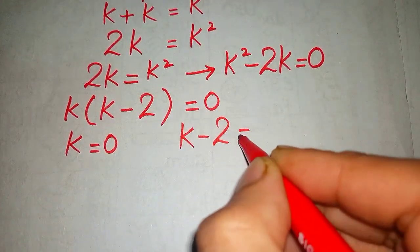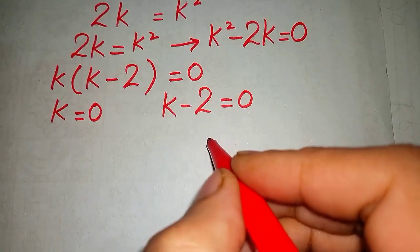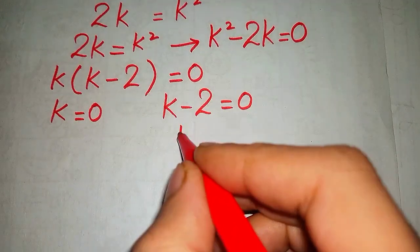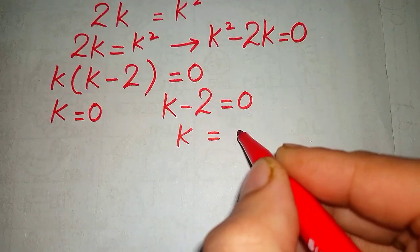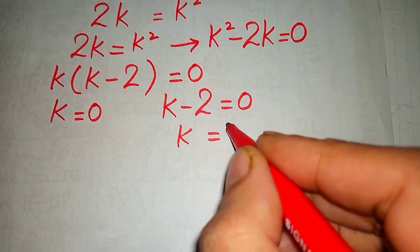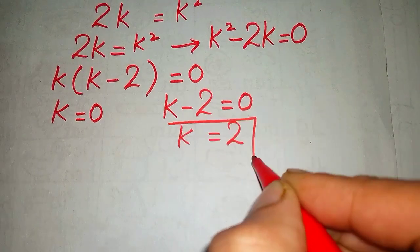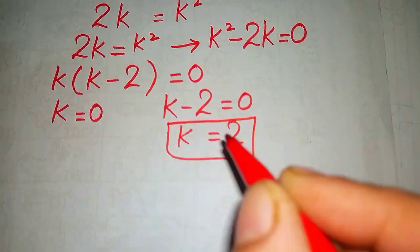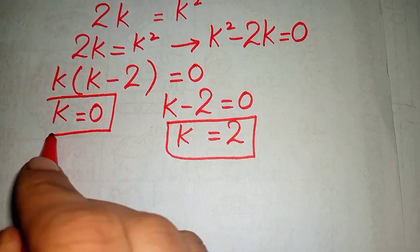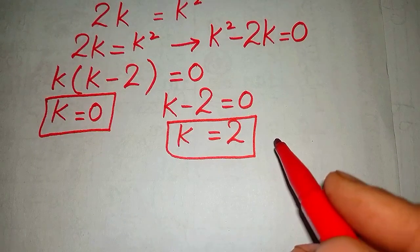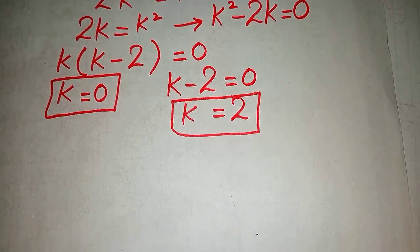We have two values for k: k equals 0 and k minus 2 equals 0. When we take negative 2 to the right side it becomes positive 2, so the values for k are k equals 0 and k equals 2.